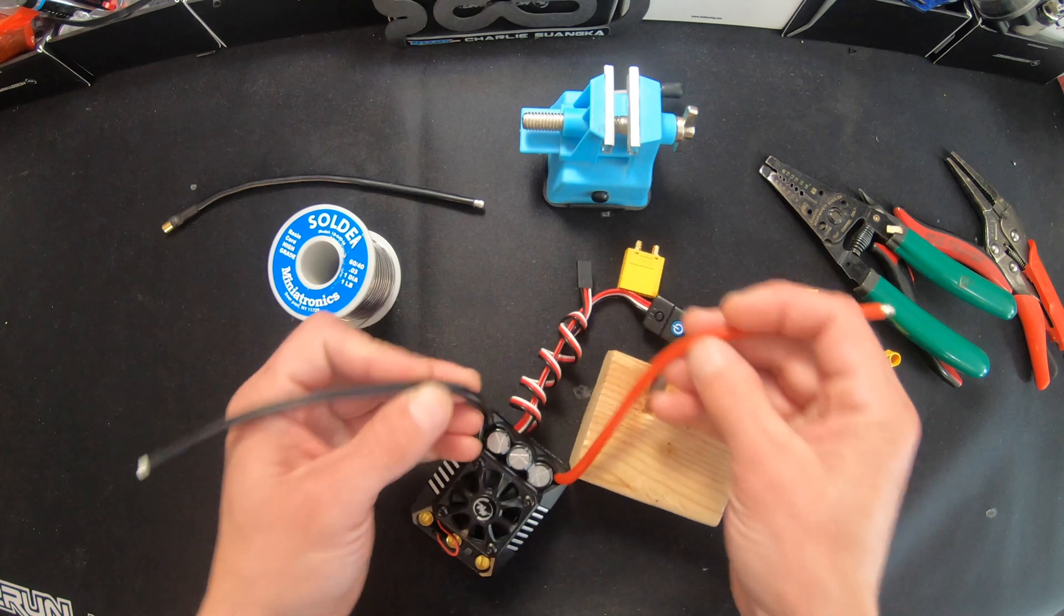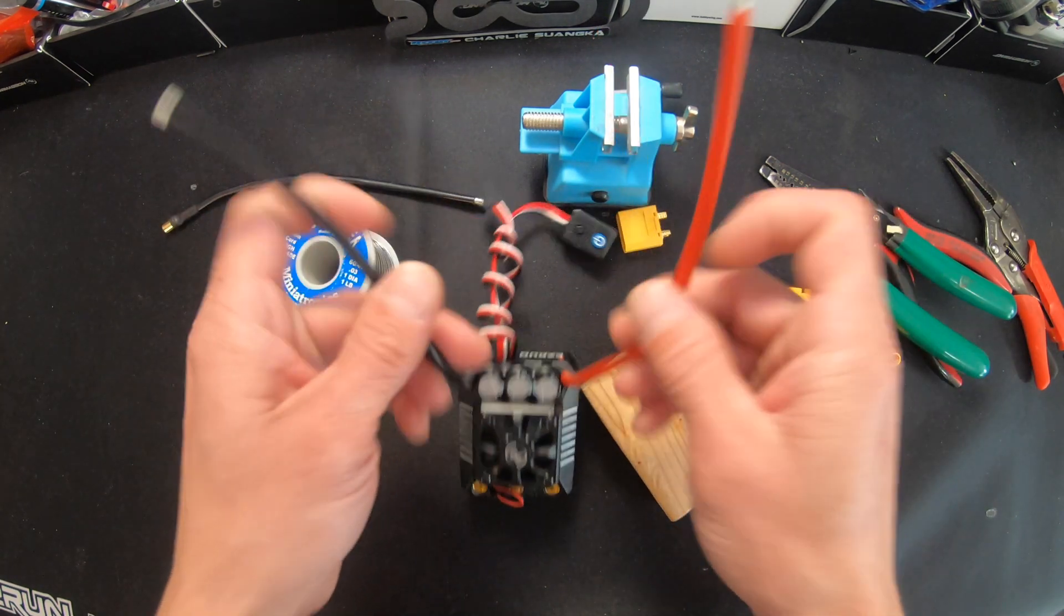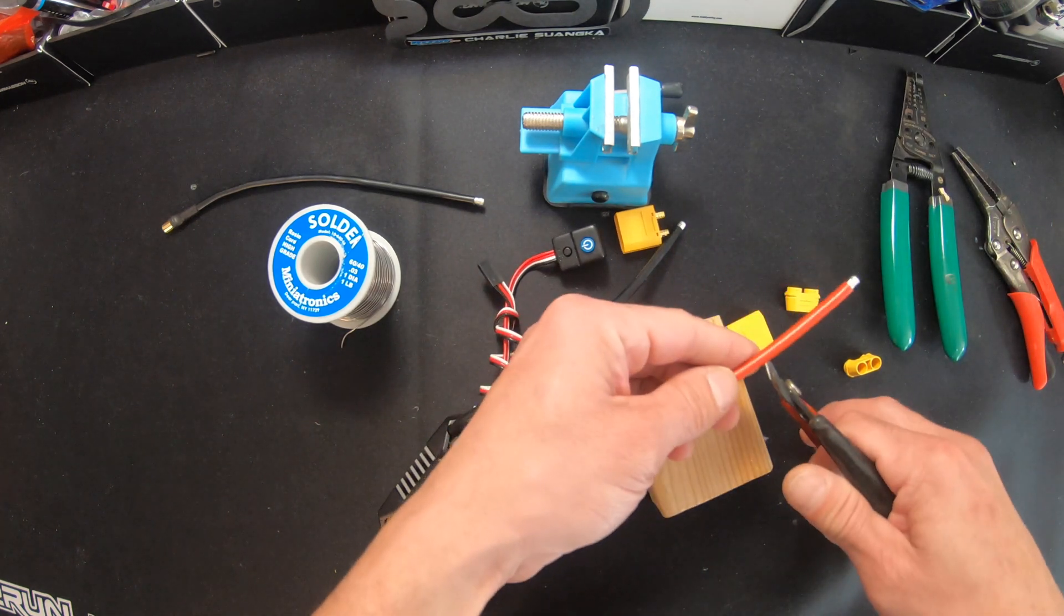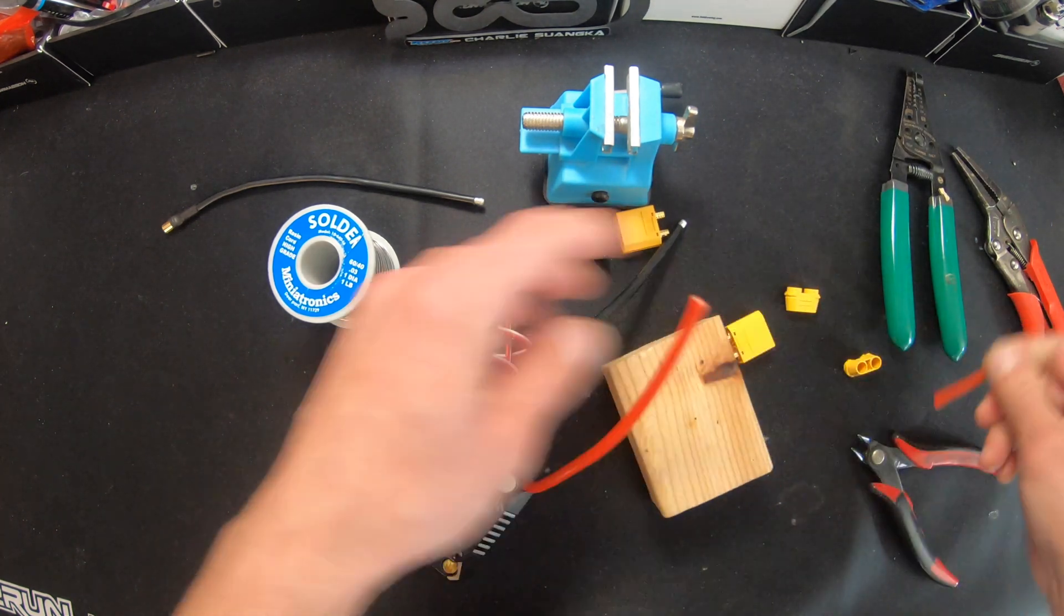For the vehicle that this is going in, the battery packs are going to be on either side. It's going into an X-Maxx. So I'm going to make these a little bit shorter because less wire is always a good thing. I'm going to cut off about the same amount from each side.